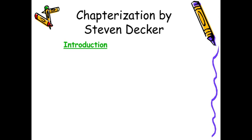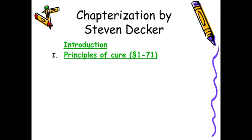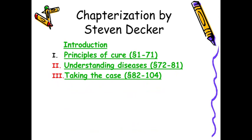The first chapter is the introduction. All of us know that the introduction is a chapter which was very difficult to understand — even for a person with reasonable knowledge of English. Introduction is made simpler here. Then there are 12 chapters: the first chapter is 'Principles of Cure' from aphorism 1 to aphorism 70, which is the theoretical part. Stephen Decker has included aphorism 71 also in it.